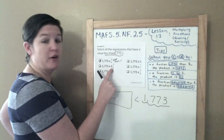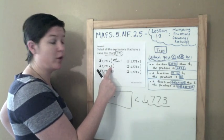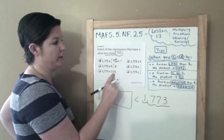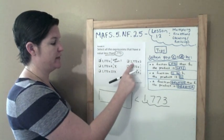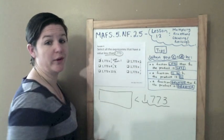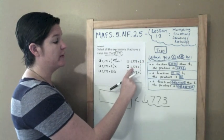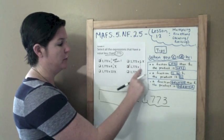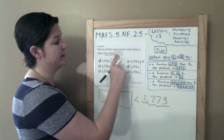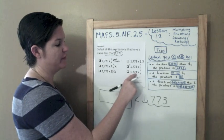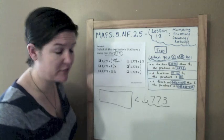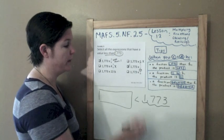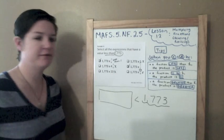1,773 times 4 and 3 fourths - that 4 is a whole number, making it greater than 1, so no. 1,773 times 13 - 13 is greater than 1, we want less than, so eliminate. 1,773 times 5 - 5 is a whole number, greater than 1, eliminate. 1,773 times 1 half - one half is a fraction less than 1, so this would work; the product would be less. 1,773 times 9 eighths - careful, it looks like a fraction but the numerator is greater than the denominator, so the fraction is greater than 1 - not the answer. So just the first and the fifth are correct.